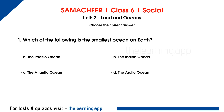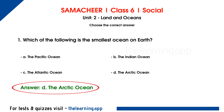The correct answer is option D, Arctic Ocean. On Earth, there are 5 oceans: Pacific, Indian, Atlantic, Arctic, and Southern Ocean. The Arctic Ocean is the smallest of the five oceans.